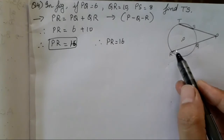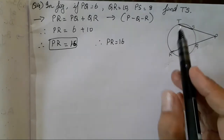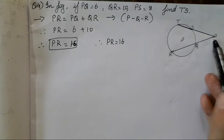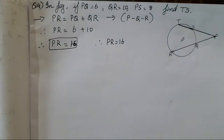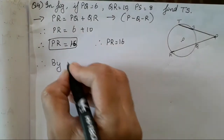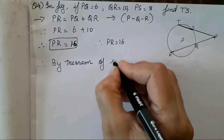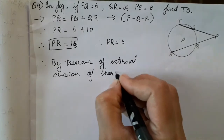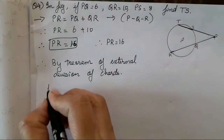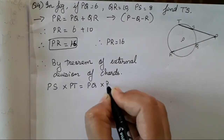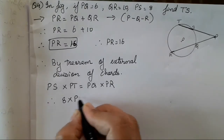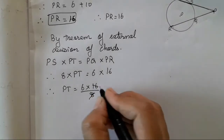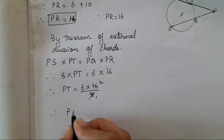By the theorem of external division of chords, PS × PT = PQ × PR. Substituting: 8 × PT = 6 × 16. Therefore PT = 6 × 16 upon 8 = 12.